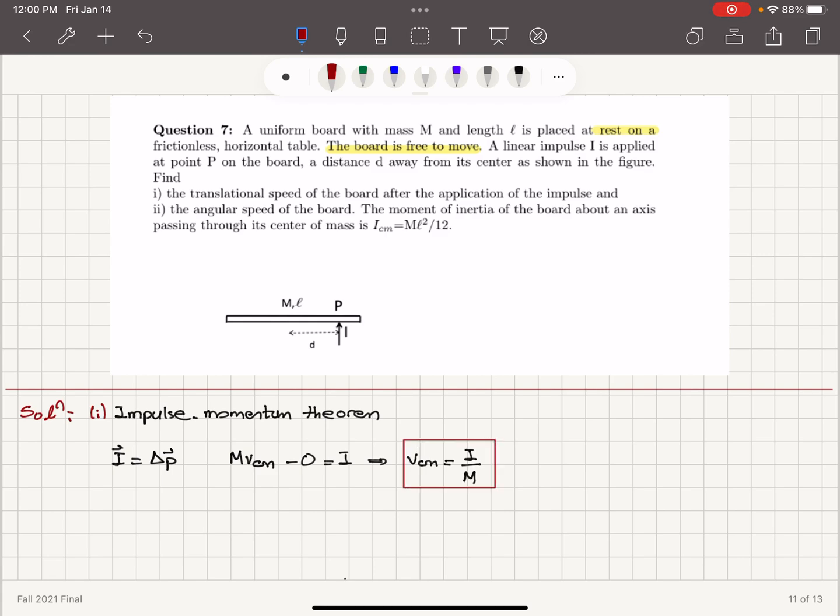In the second part, we want to know the angular speed of the board. If the angular speed of the board is to be determined when the board is free to move, we will consider the center of mass as a pivot point for the free motion. And we have angular momentum, angular impulse theorem.